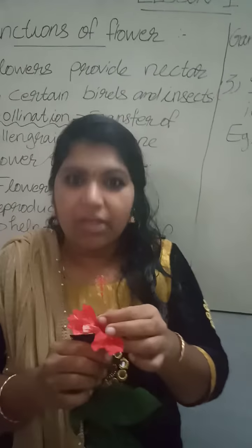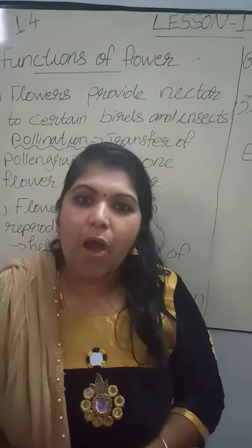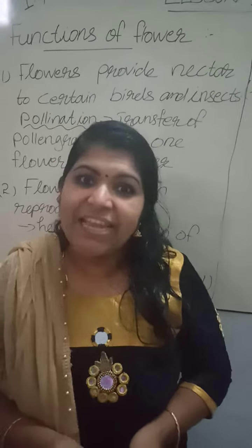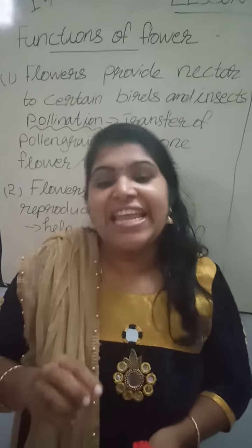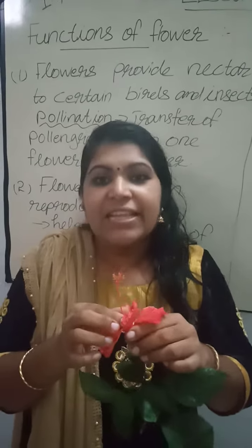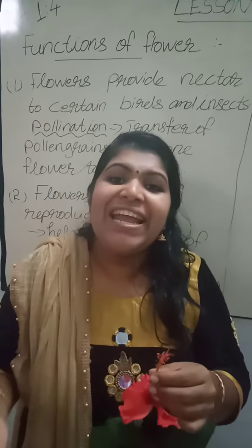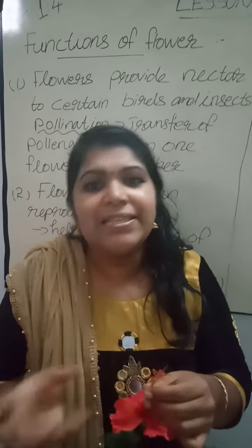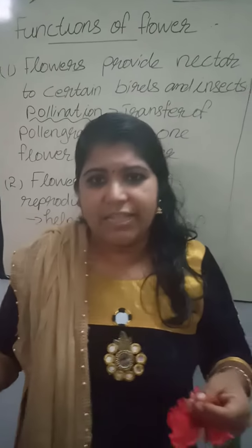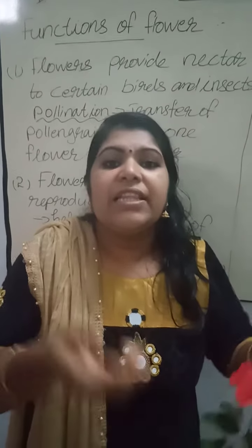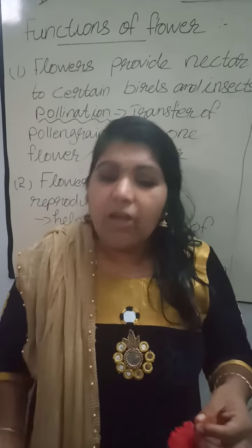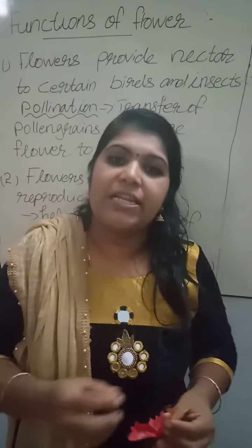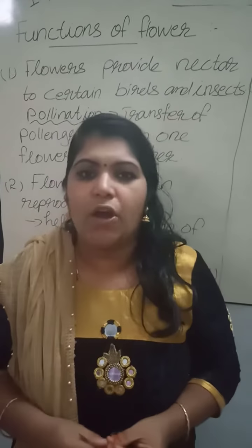The pollen grains — do you know the term pollen grains? Pollen grains are powdery and also yellowish in color. So these powdery and yellowish male cells present on the stamen are known as pollen grains. So when an insect lands on the flower to feed, these pollen grains stick on the bodies of the insect. So when the insect travels from one flower to another, they carry the pollen grains. So the transfer of pollen grains from one flower to another is known as pollination.